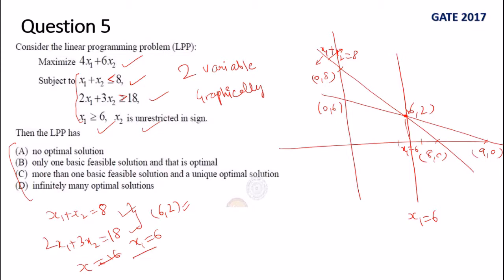You take any reference point. In this I am putting (0, 0). So 0 + 0 ≤ 8 is true, so that means this side region will be marked which contains the point (0, 0).